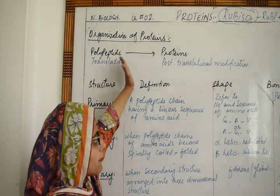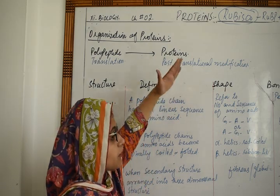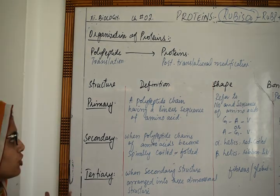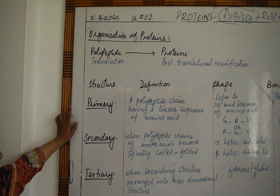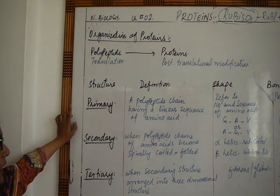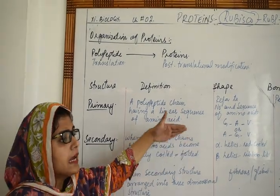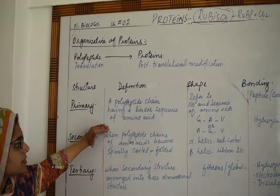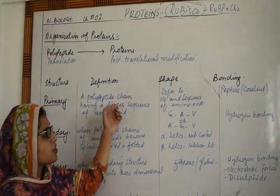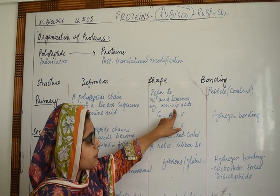Polypeptide is formed in the process of translation, while the polypeptide then has to undergo post-translational modifications. The first structure is called the primary structure. The polypeptide chain has a linear sequence of amino acids — this is called the primary structure, and it refers to the number and sequence of amino acids.